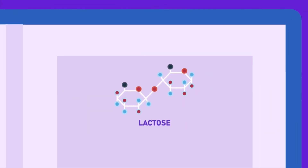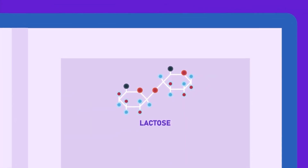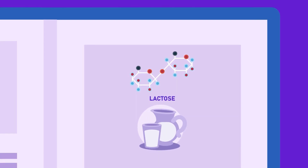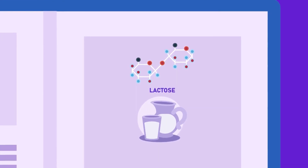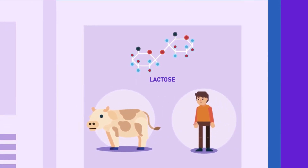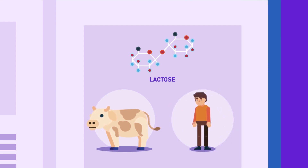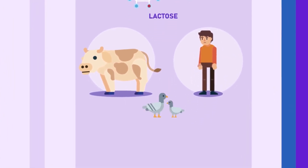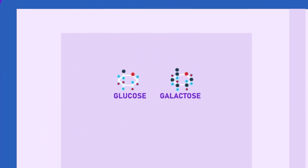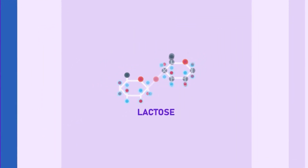Lactose, also known as milk sugar, is commonly found in milk. It is found in milk of all mammals, including humans, and even in some similar fluids such as pigeon's milk. It is formed from glucose and galactose combined together.